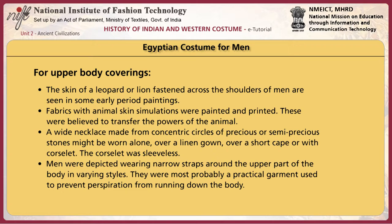In later periods, fabrics with animal skin simulations were painted and printed, believed to transfer the powers of the animal. A wide necklace made from concentric circles of precious or semi-precious stones might be worn over a linen gown, over a short cape, or with a corslet. The corslet was sleeveless. Men were depicted wearing narrow straps around the upper part of the body in varying styles, most probably a practical garment used to prevent perspiration from running down the body.